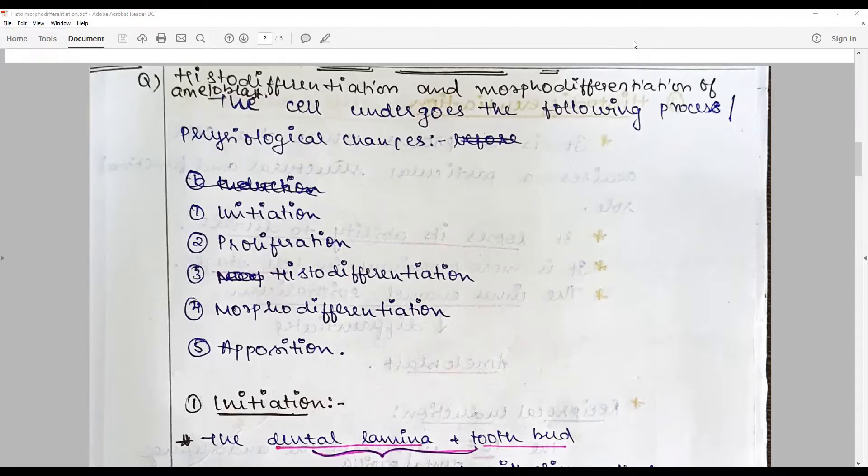Tooth development is divided into two types. One is based on morphology like bud, cap, early bell, late bell, and root formation. The other is histophysiological, where the function or process is considered. Histomorpho-differentiation comes under this category.